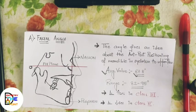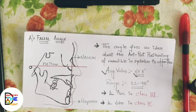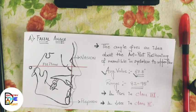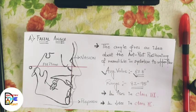Hi everyone, welcome back to our channel 'Dentistry to the Point.' This is Dr. Dhrumal Manik. In this video, we're going to discuss the Downs analysis. The Downs analysis contains two parts: the skeletal parameter and the dental parameter. Each of these parameters contains five variables, so first we'll discuss the five skeletal parameters, then the five dental parameters.